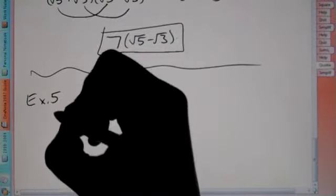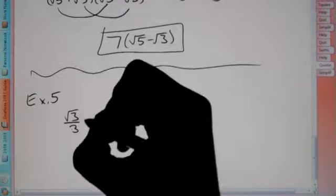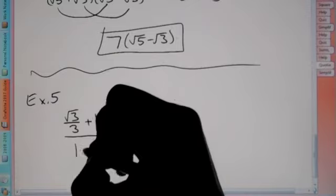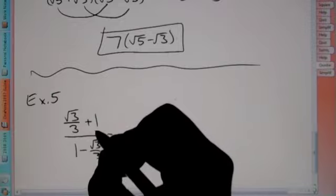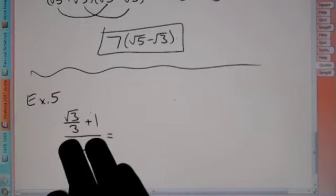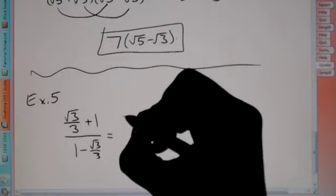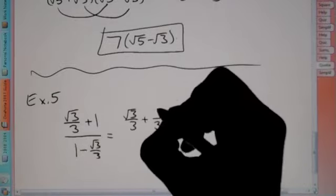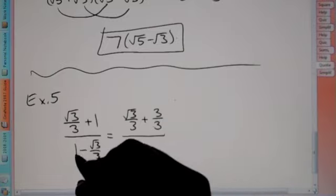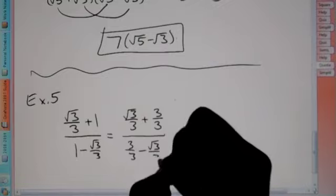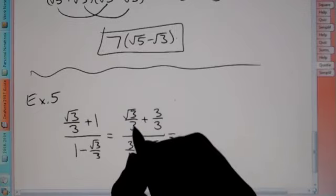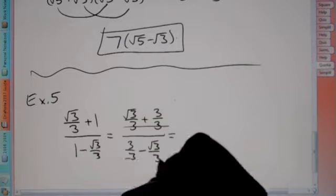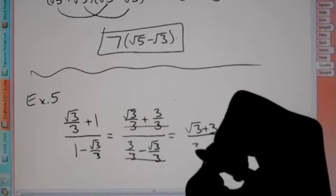Example 5: we have (root 3 over 3 plus 1) over (1 minus root 3 over 3). We have fractions within our fraction, so we need a common denominator in the numerator. Instead of writing 1, we write 3 thirds. Same thing on the bottom: 3 thirds minus root 3 over 3. Since everything has a denominator of 3, we can cross those out, leaving us with root 3 plus 3 over 3 minus root 3.